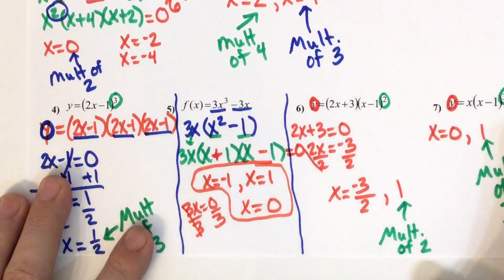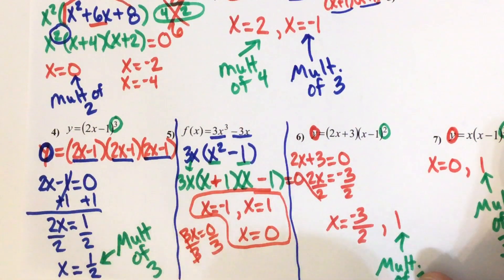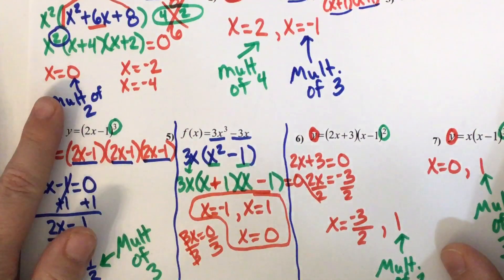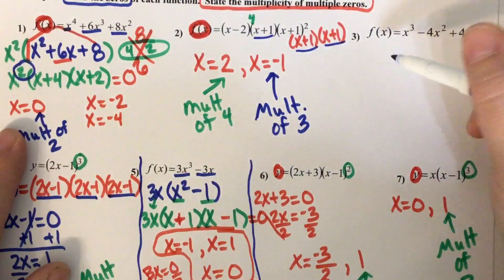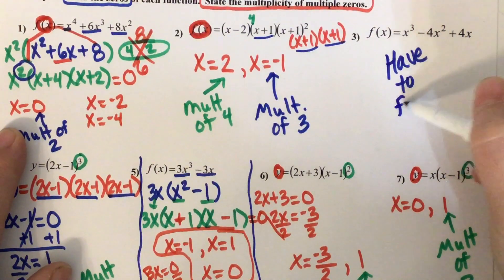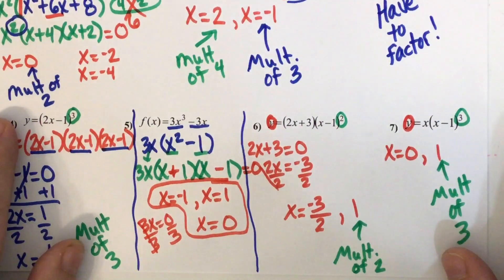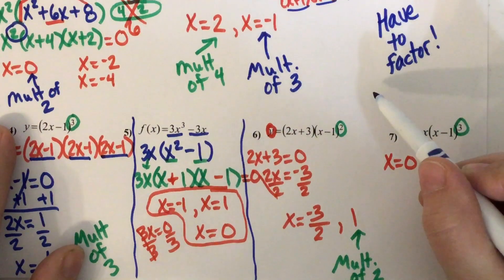Nothing happens more than once, so nothing has to be said about multiplicity. Okay, and I think we'll stop there. The only one I didn't do was number three, and you would have to factor. Once you got it factored, then it would just be like all the others. And that's it for this lesson.